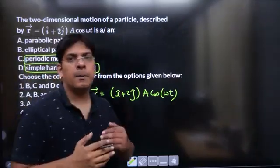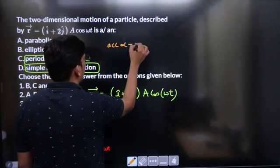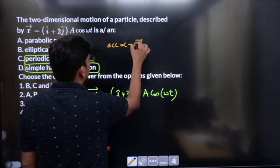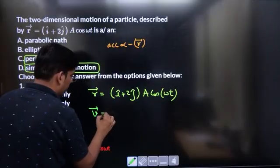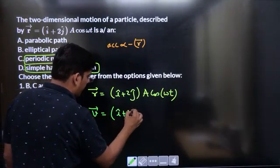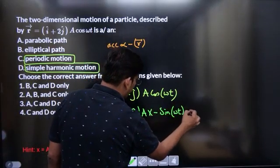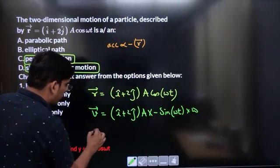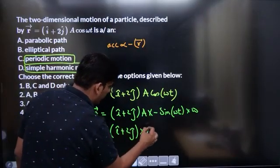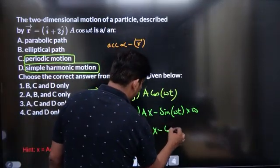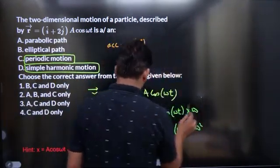For SHM, the acceleration must be proportional to the negative of displacement. Differentiating r, velocity = (i-cap + 2j-cap)·a·(−ω sin ωt). Differentiating velocity again, acceleration = (i-cap + 2j-cap)·a·(−ω² cos ωt). Since (i-cap + 2j-cap)·a·cos(ωt) = r, we get acceleration = −ω²·r, which is exactly the condition for SHM.